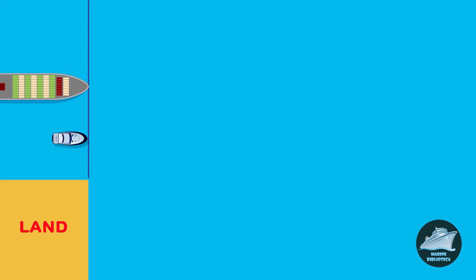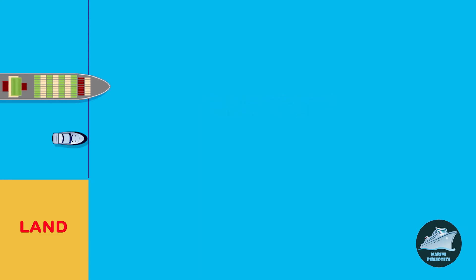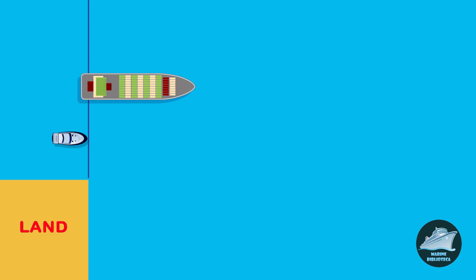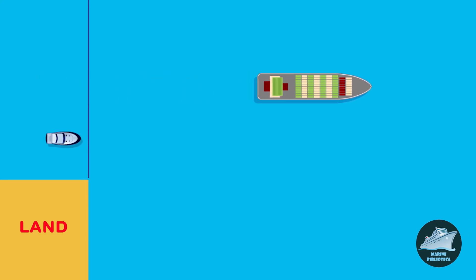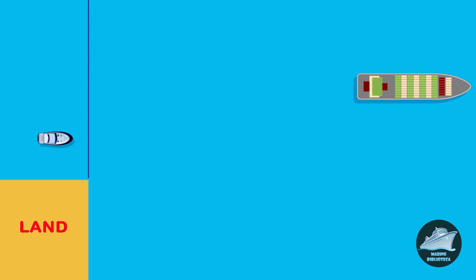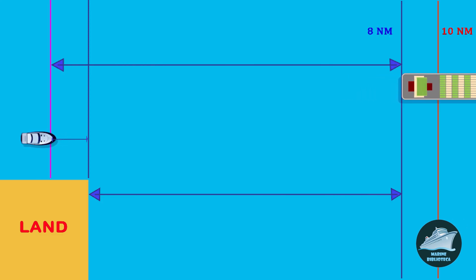In the second scenario, all other conditions being the same, but now we have a 2-knot current from ahead. The ship starts moving at a speed of 10 knots. In this case, the ship will only cover 8 nautical miles in one hour because of the adverse current.